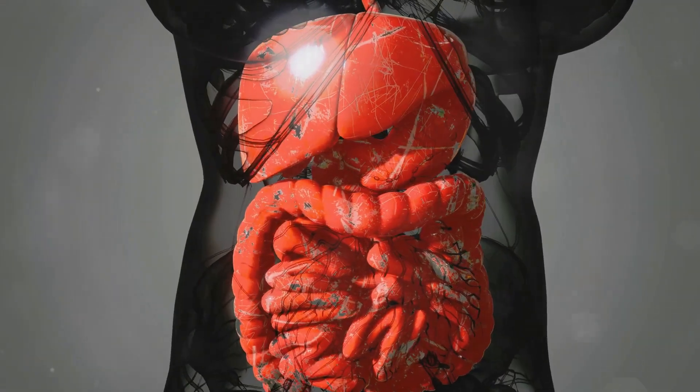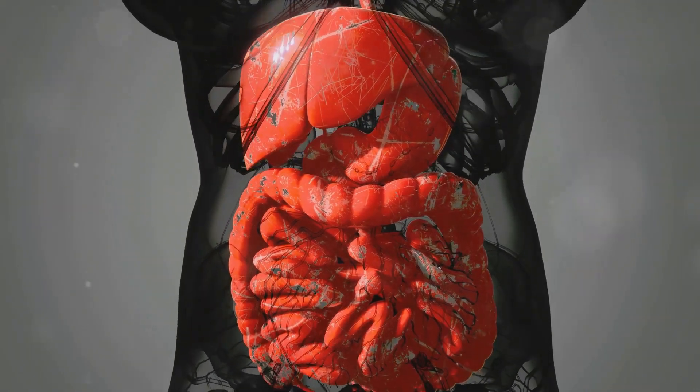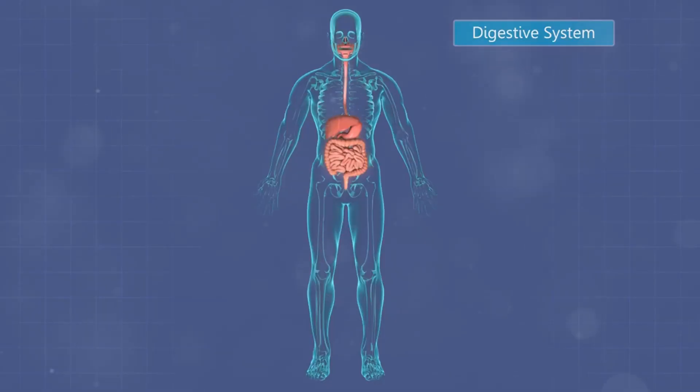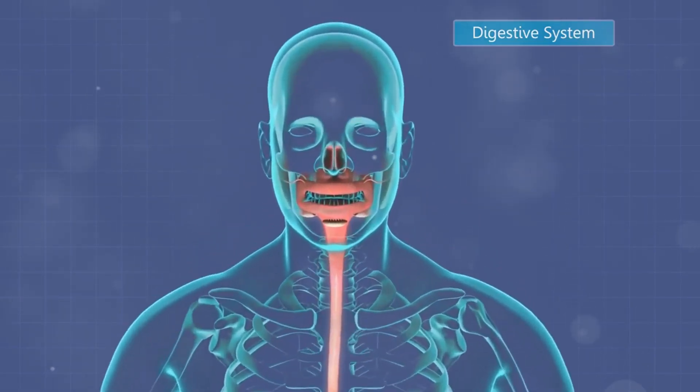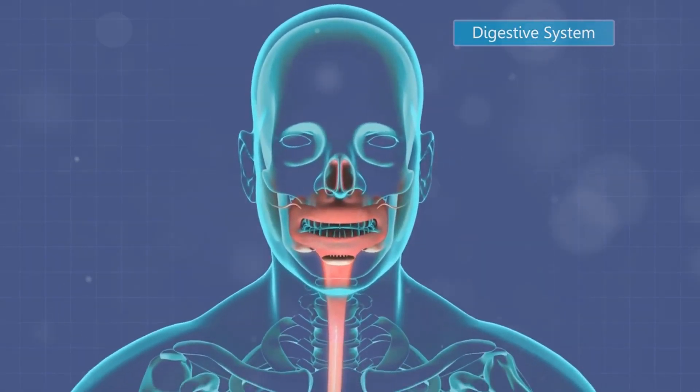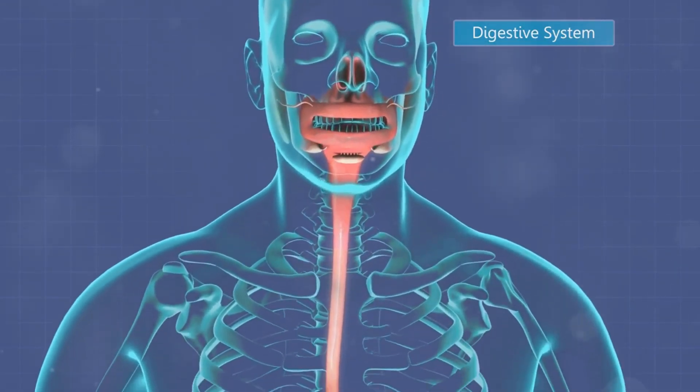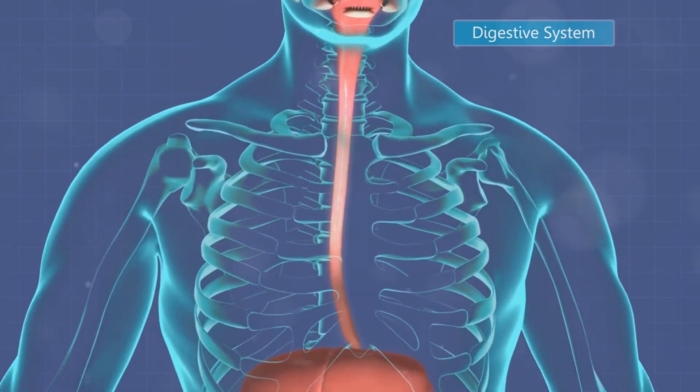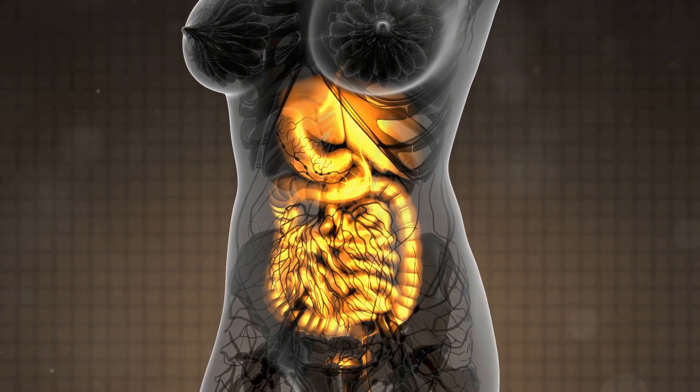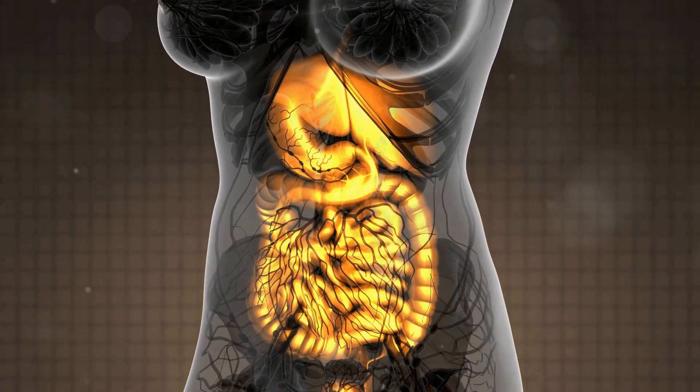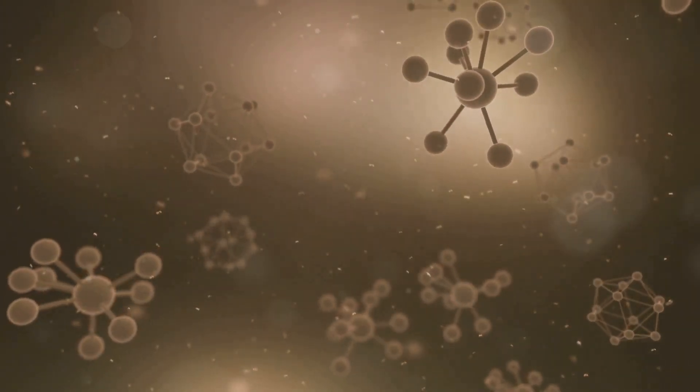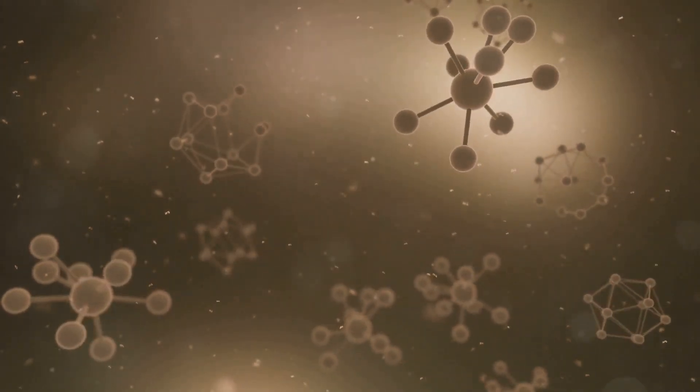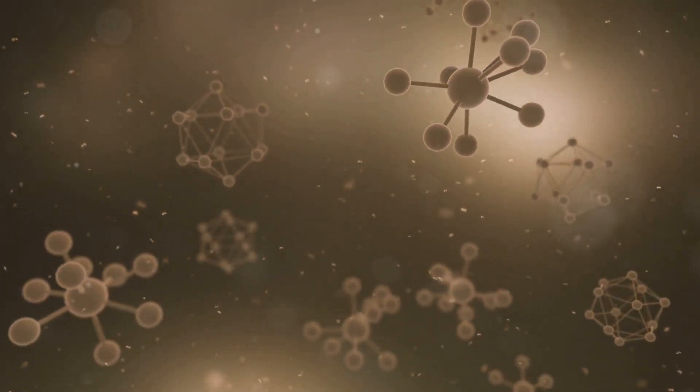Moving on to digestion decoded: the gut's role in nutrient absorption. Beyond its role in immunity, the gut microbiota plays a crucial role in digestion and nutrient absorption, breaking down food and extracting essential nutrients that our bodies can utilize. Our digestive system, while efficient, cannot digest certain types of dietary fiber. These fibers, known as prebiotics, serve as food for beneficial bacteria in our gut, promoting their growth and activity.